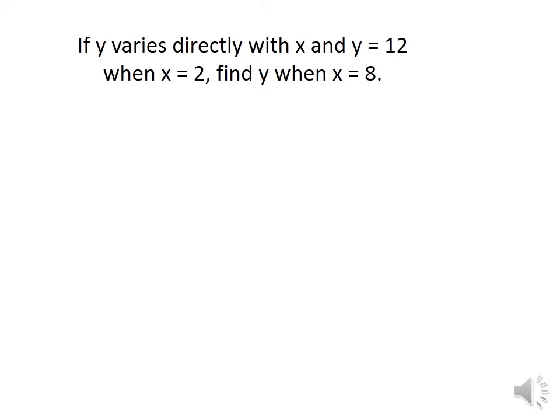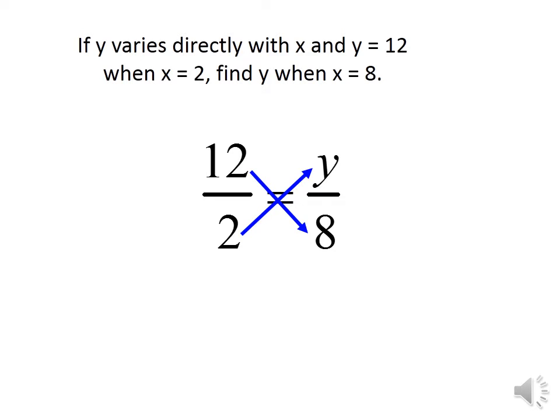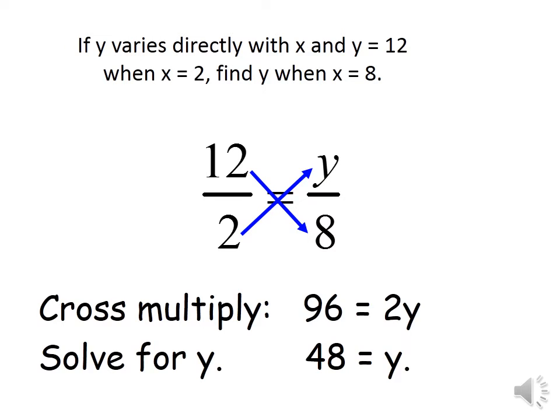If y varies directly as x and y equals 12 when x equals 2, find y when x equals 8. We have y1 equals 12, x1 equals 2, and x2 equals 8. Using y1 over x1 equals y2 over x2: 12 over 2 equals y over 8. After cross multiplication: y equals 12 times 8 divided by 2, giving y equals 48.